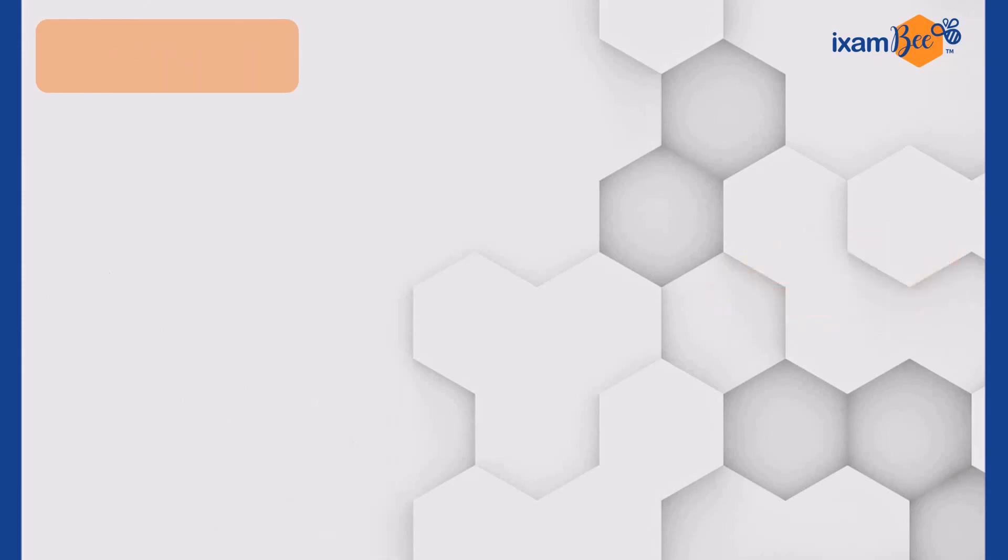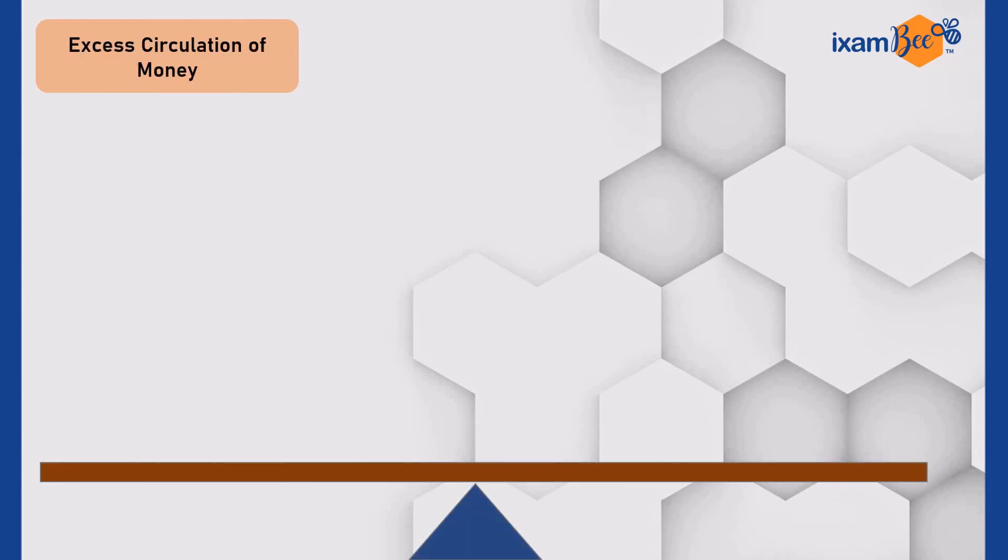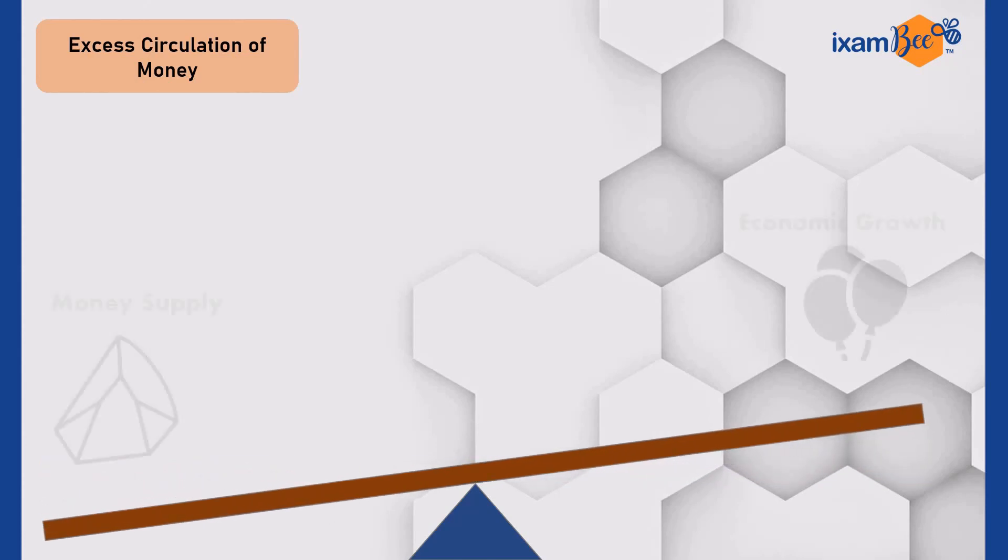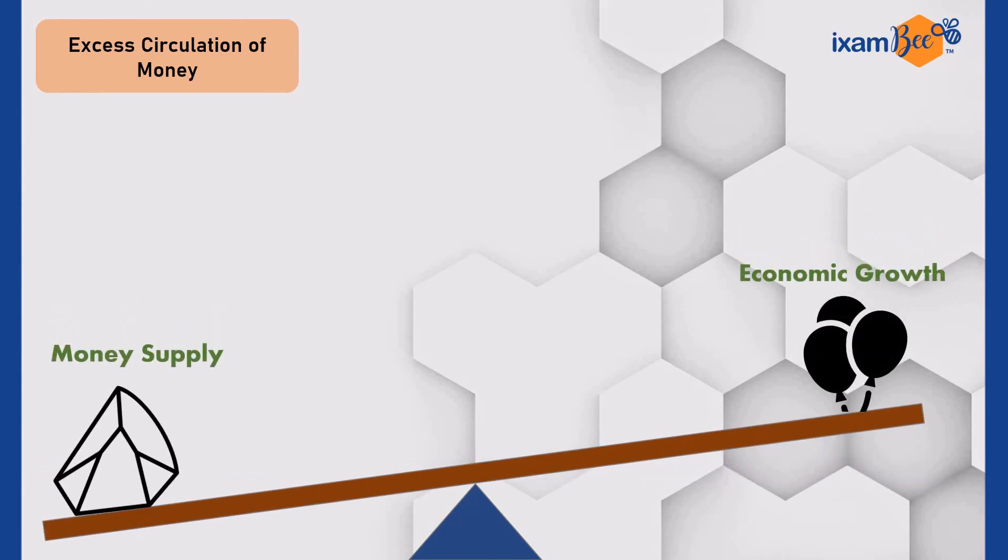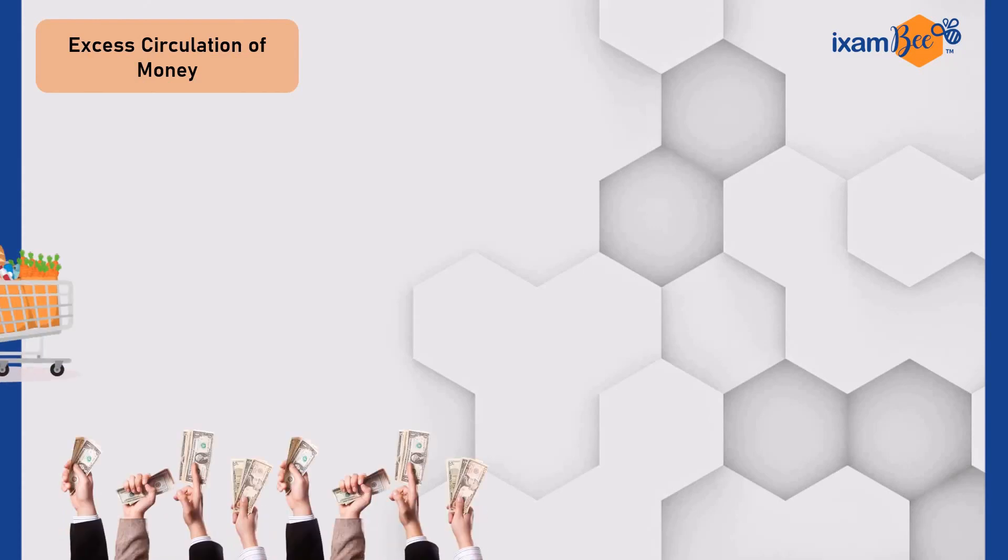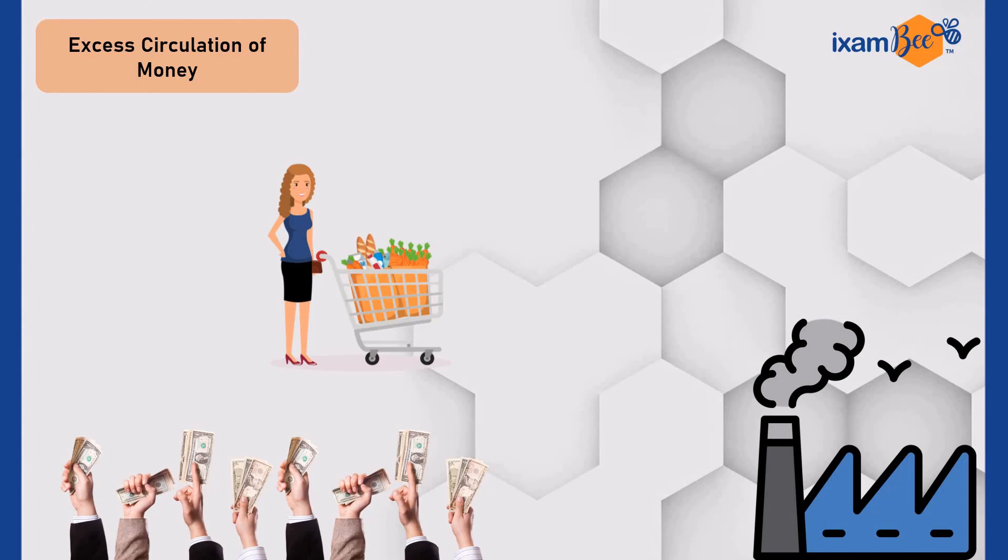Excess circulation of money. Excess circulation of money also leads to inflation. If all of a sudden the money supply increases but the level of economic growth remains constant, there will be inflationary pressure on the economy. For example, if people have more money with them they tend to spend more, but the production output in the economy will not increase significantly overnight. Ultimately, too much money will be chasing fewer goods, and that will again lead to demand-pull inflation.